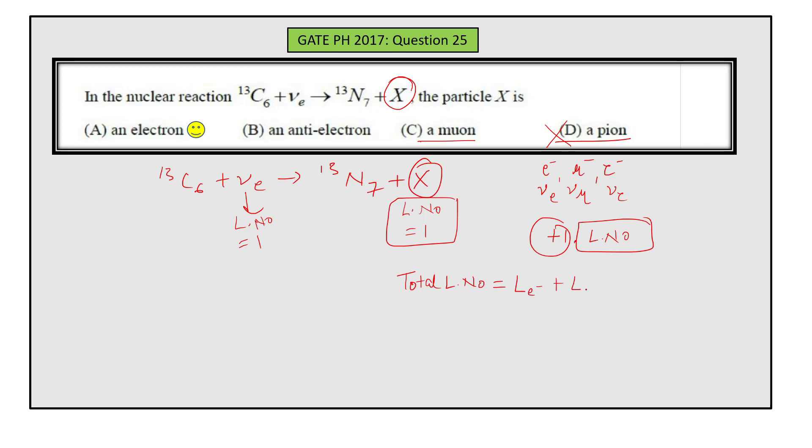And then we have individual lepton numbers. Both should be conserved, but in this case only total lepton number is conserved, not individual lepton number. So this option is also wrong.